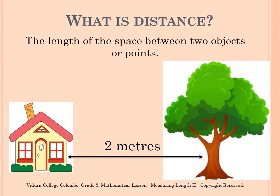What is distance? Distance is the length of the space between two objects or points. Look at the following picture — there is a house and a tree. In between this house and the tree, you have a space, and that space is what you call the distance. It is shown using an arrow and the distance between the house and the tree is 2 metres.